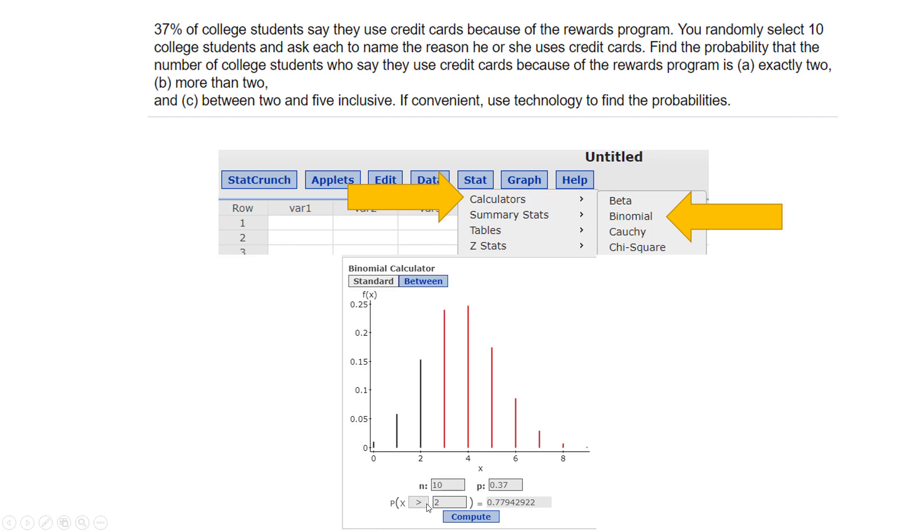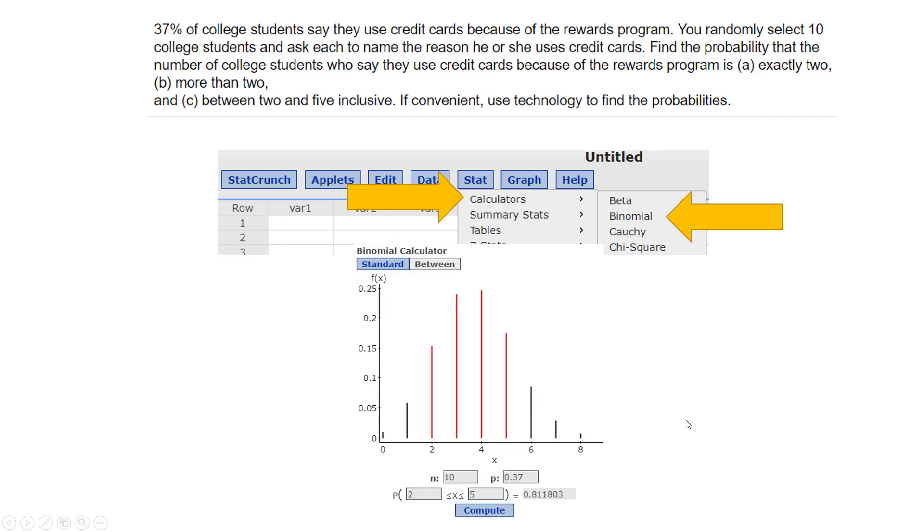This one's kind of cool because on the calculator you would have to do two, three, four, and five and add up those probabilities. But StatCrunch lets you do the between.